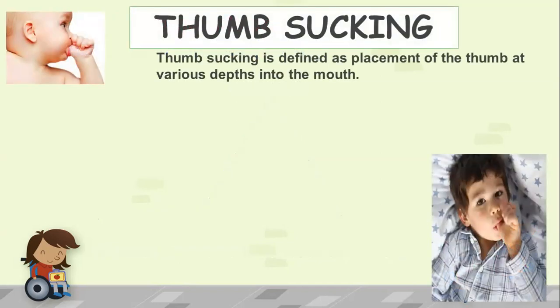Coming to the first habit, which is thumb sucking. Thumb sucking is defined as the placement of the thumb at various depths into the mouth. There are a few theories and concepts of thumb sucking: the Freudian theory, oral drive theory, rooting reflex theory, sucking reflex, and learning theory. The Freudian theory states that a child goes through various distinct phases of psychological development. Particularly in the oral phase, it is believed that the mouth is an erogenous zone, and during this phase the child takes anything and everything into the oral cavity.